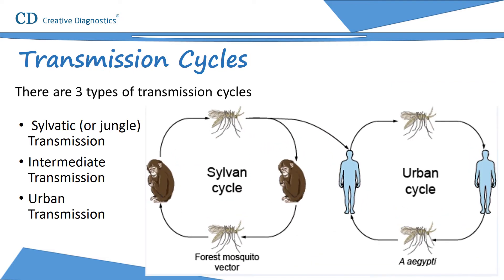There are three types of transmission cycles: jungle transmission, intermediate transmission, and urban transmission. In jungle transmission, in tropical rainforests, monkeys — the primary reservoir of yellow fever — are bitten by wild mosquitoes which pass the virus on to other monkeys. Occasionally, humans working or traveling in the forest are bitten by infected mosquitoes and develop yellow fever.